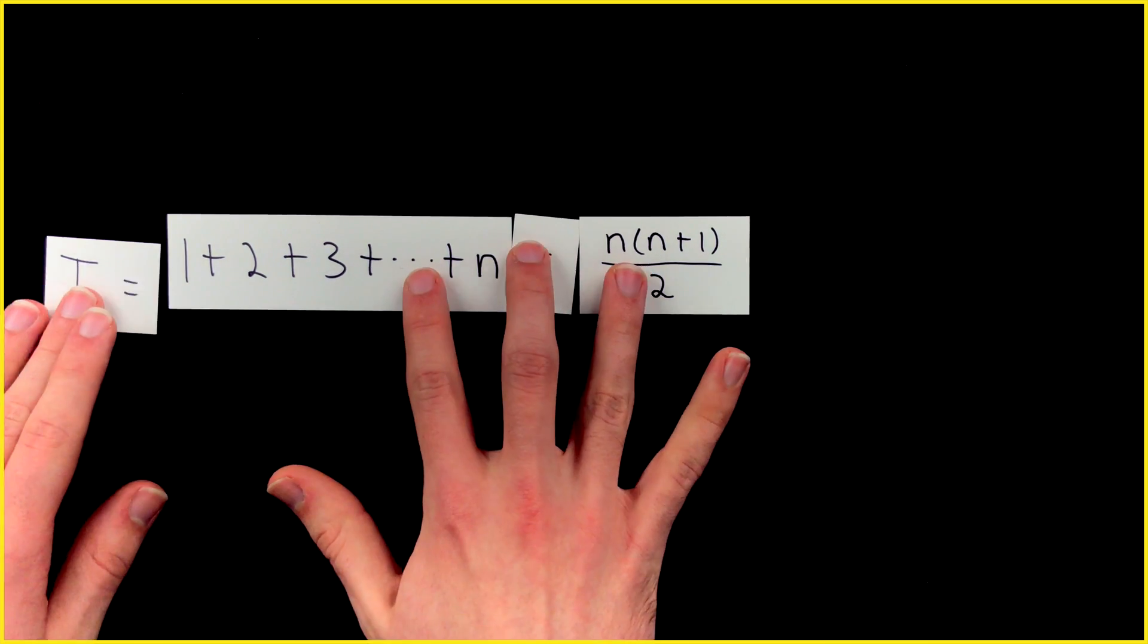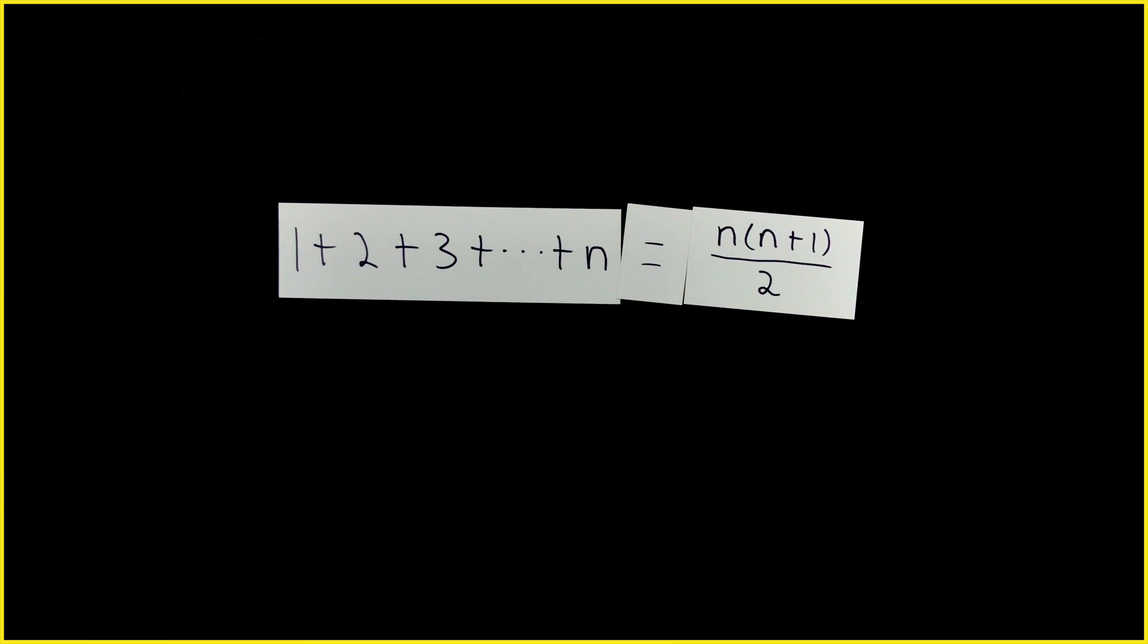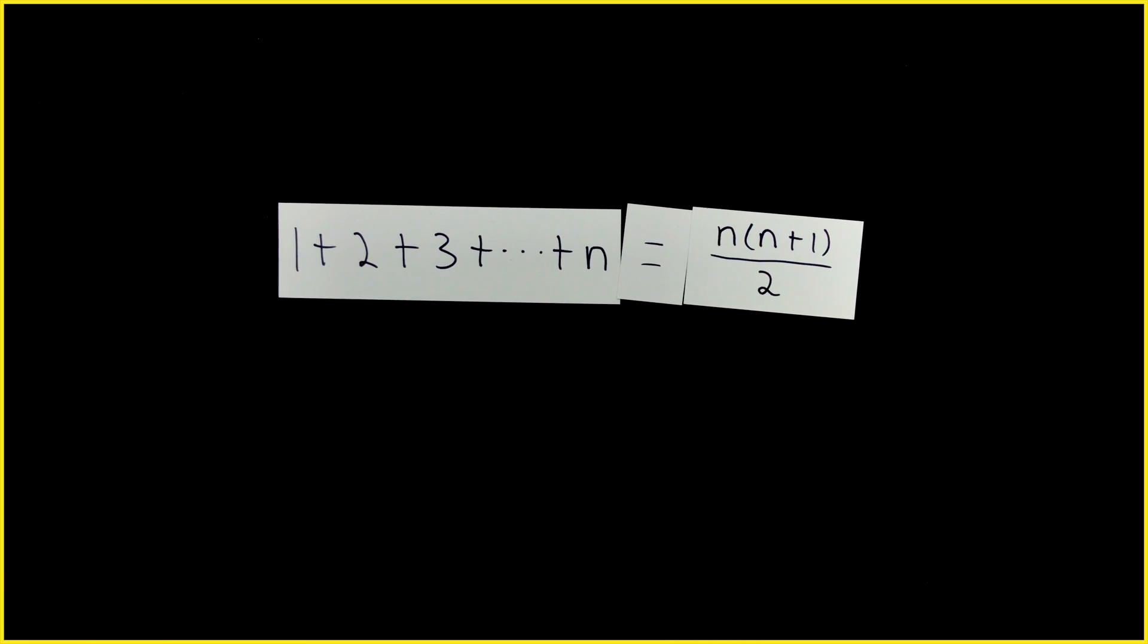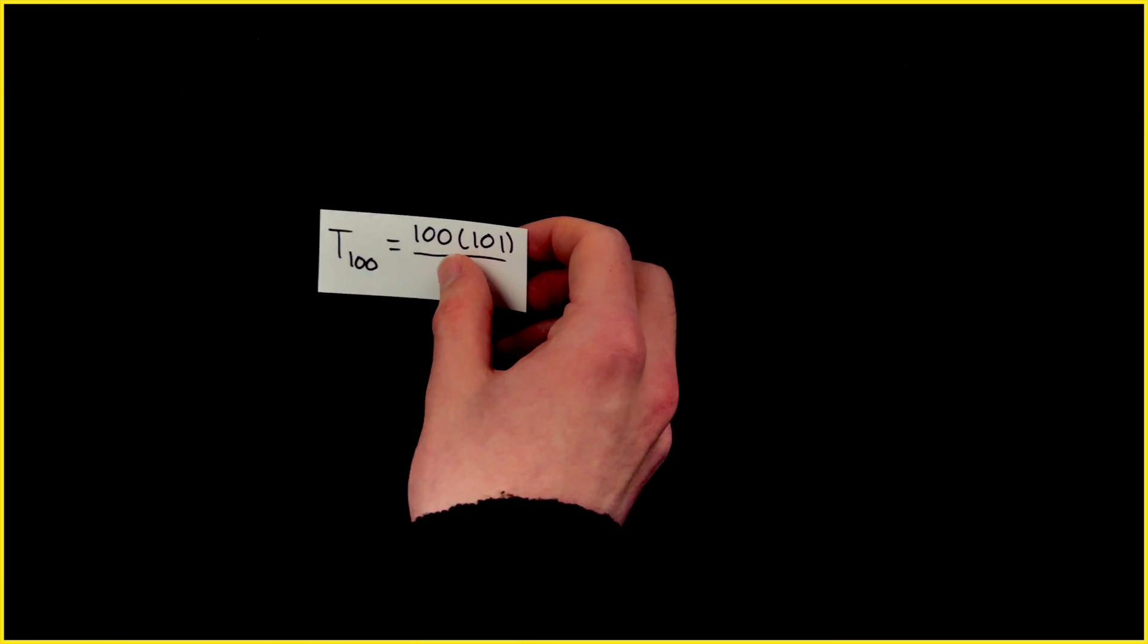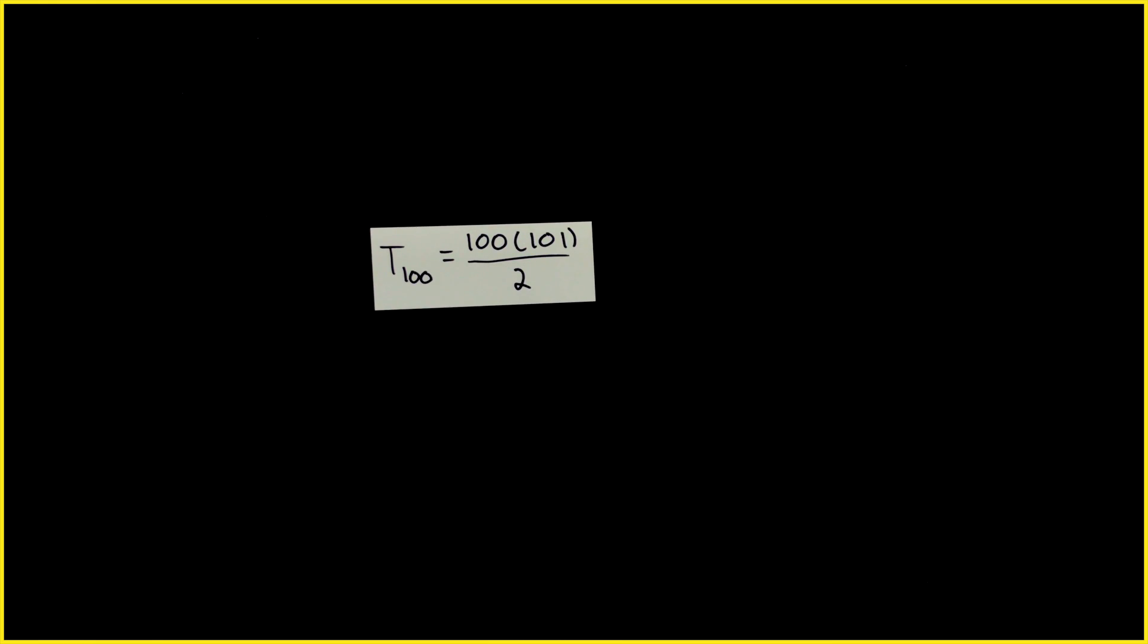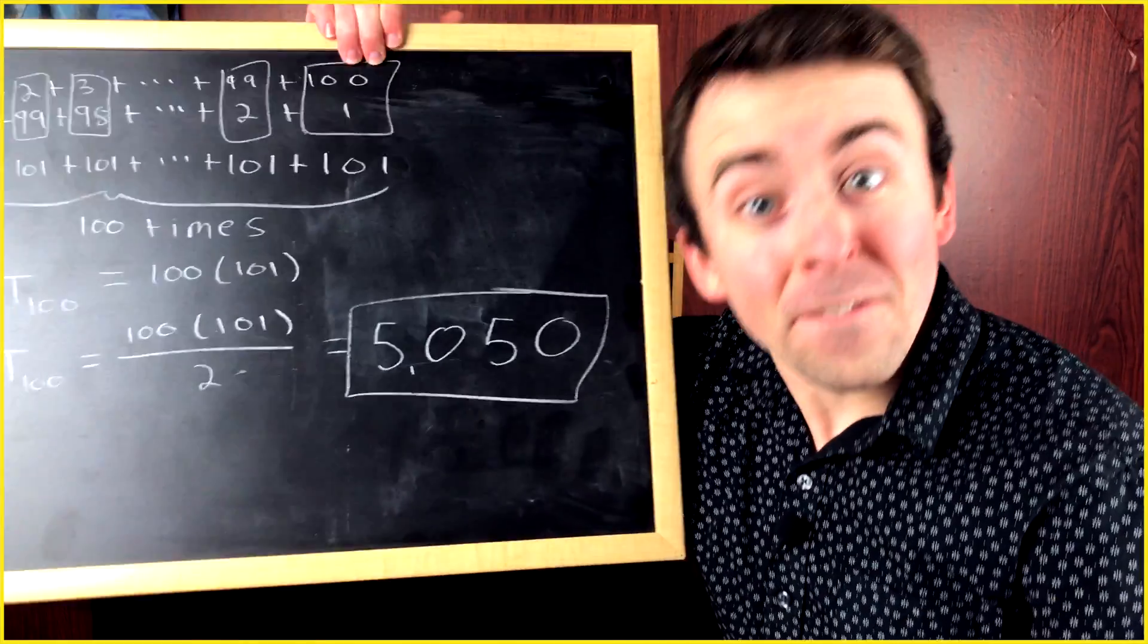If you don't care about triangular numbers, just forget about the Tn. This part is cool enough. The sum of the first n positive integers is n times the next positive integer divided by two. Having reasoned through this awesome formula, calculating T100 now is a piece of cake. It's 100 times 101 divided by two, which equals 5,050.